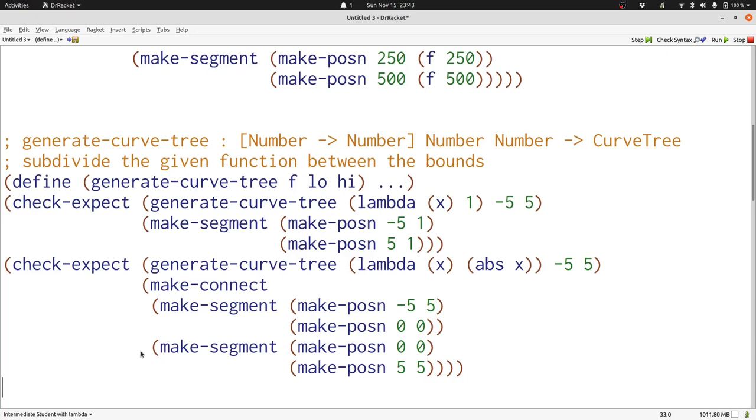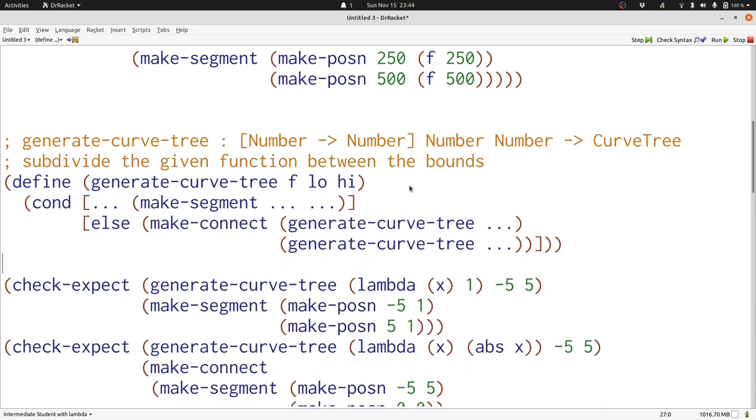Now let's think about how to write generate curve tree. Like with writing our quicksort functions, we're going to start by considering output data, that is a curve tree, and we'll add two cases because there's two possibilities for curve trees. Here are two possibilities. In some cases, we're going to produce a segment. Otherwise, we're going to produce a connect with two sub-curve trees.